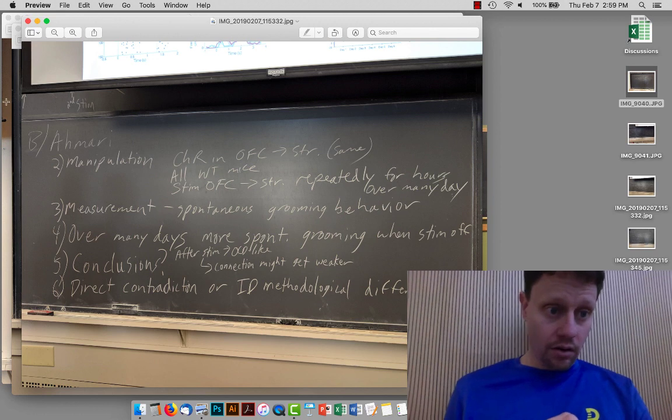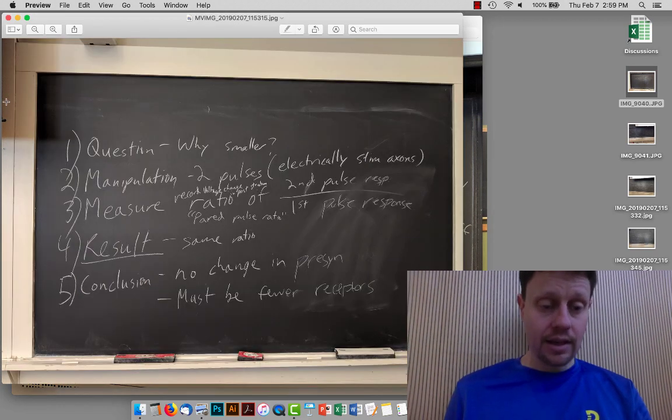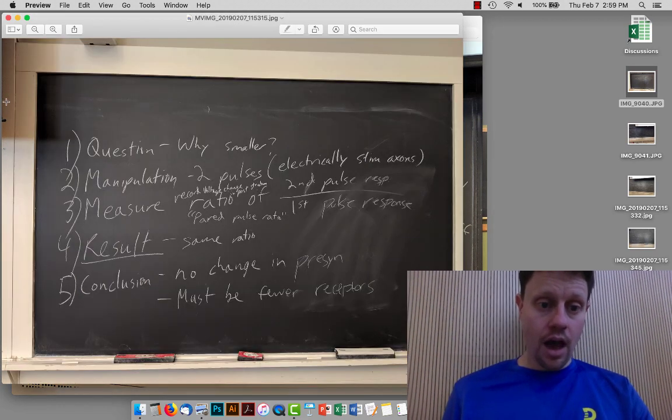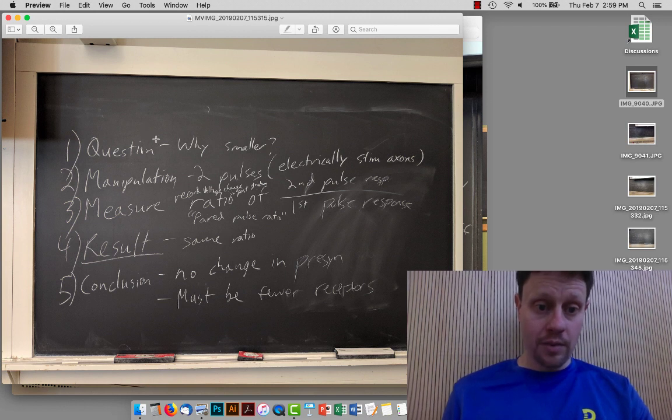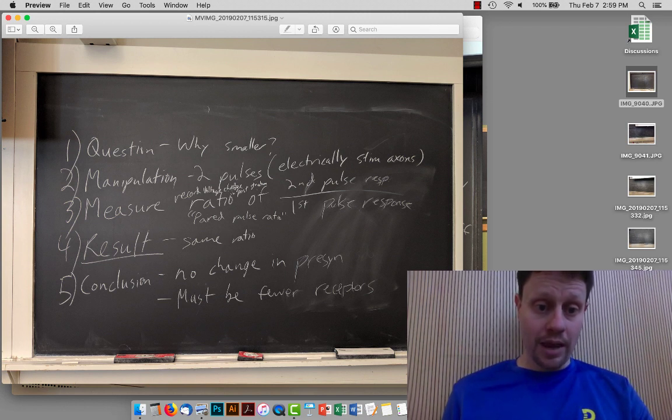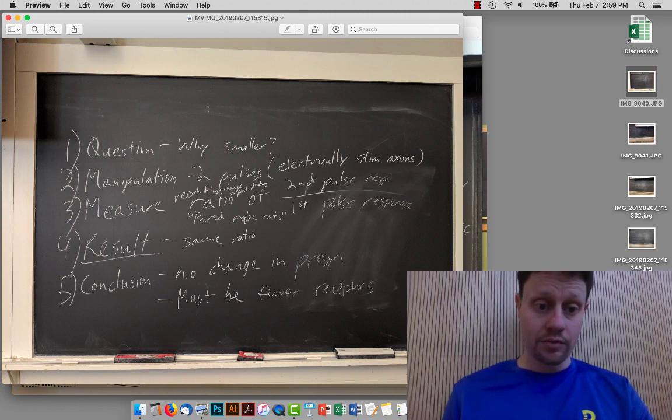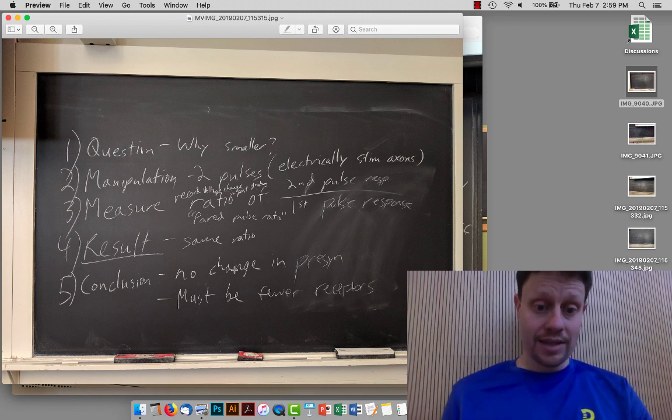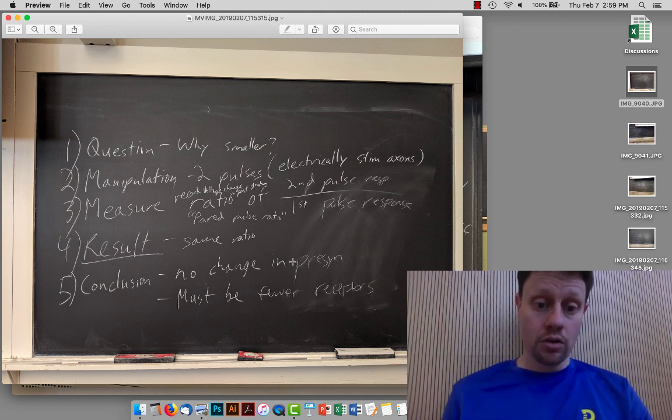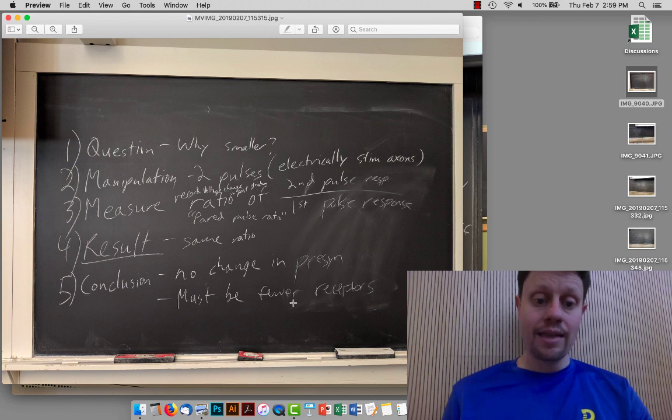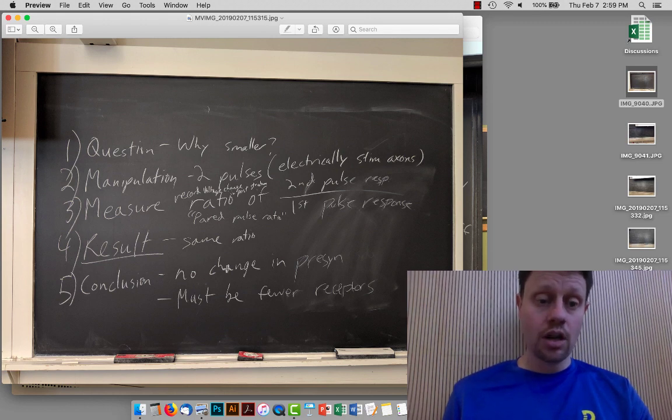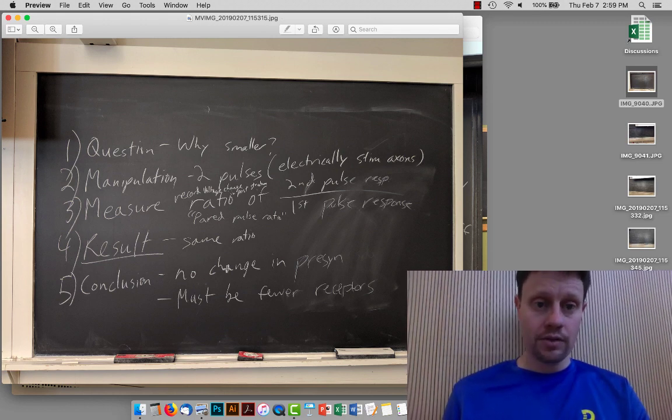This is also encapsulated in this summary here about why they are smaller, the manipulation involving a pair of pulses, looking at this paired pulse ratio as a measurement, observing the same ratio, and then concluding no change in presynaptic terminal, and therefore by process of elimination, the weakness must be because of fewer receptors.